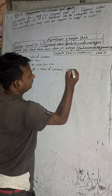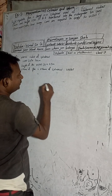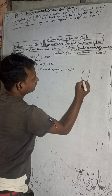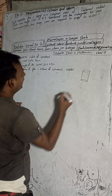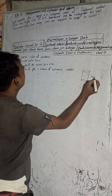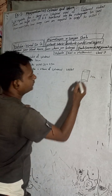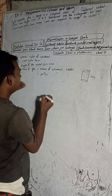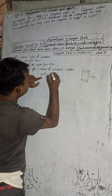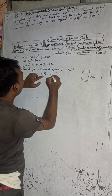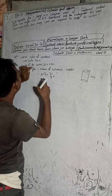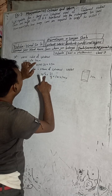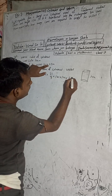Volume of the cylindrical vessel. This is our cylindrical can with height 1.5 meters and radius 1.4 meters. The formula for volume is π r² h. Pi value is 22/7, r is 1.4, so we compute 22/7 × 1.4 × 1.4 × 1.5.